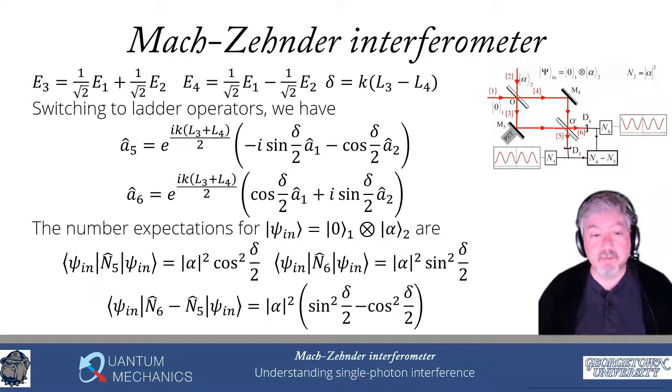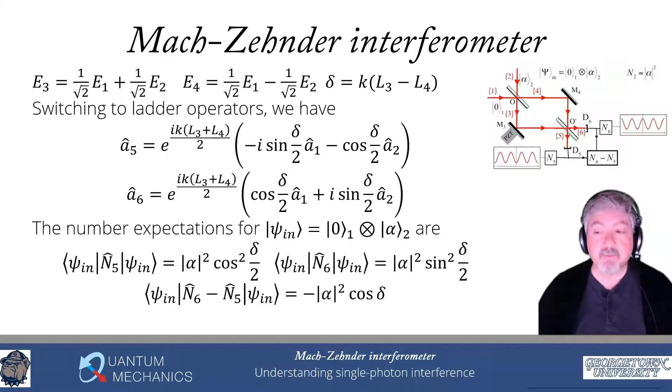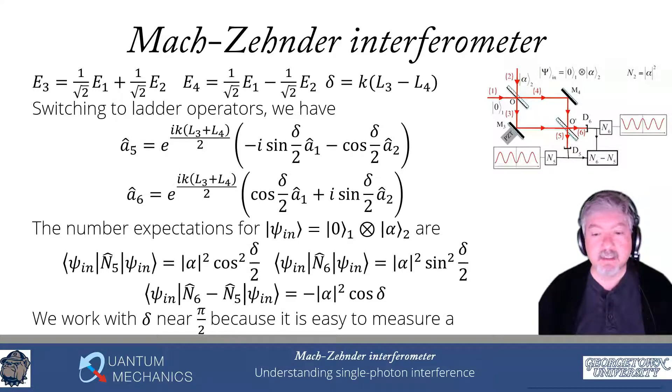We now take the difference of those two. We find the expectation value of n6 minus n5 is just given by the difference of those sine squared minus cosine squared. If you look at your half-angle or double-angle formulas, you see that we can replace that by minus alpha squared cosine delta. And it turns out we're going to be working with delta close to pi over 2. The reason why is it's actually quite easy to measure when a signal is supposed to equal zero. We measure the amount that is non-zero simply by counting photons.